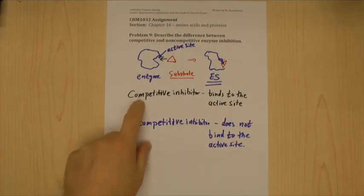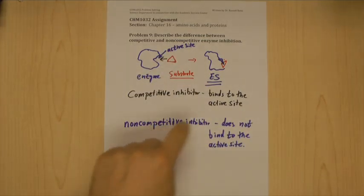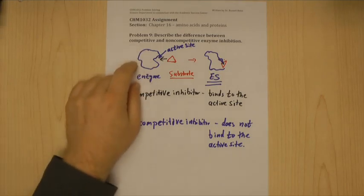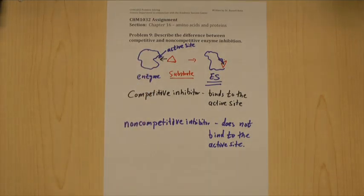That's non-competitive inhibition, got it? So competitive inhibition, the inhibitor will bind directly to the active site. A non-competitive inhibitor will bind somewhere else but will mess up the structure of the enzyme and not allow it to react with the substrate.